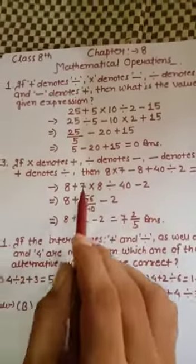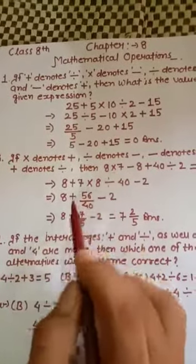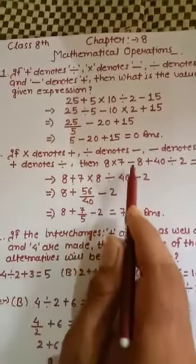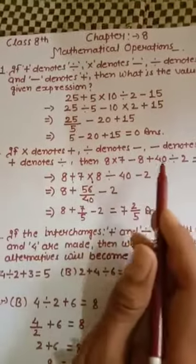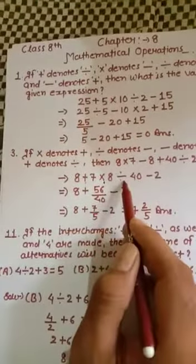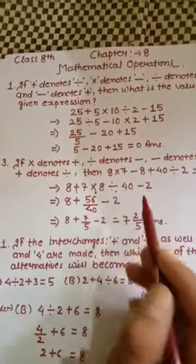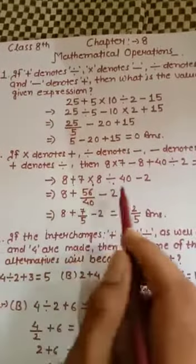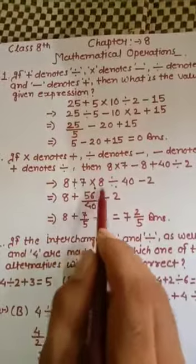Multiply should be replaced with plus, minus should be replaced with multiply, plus should be replaced with divide, and divide should be replaced with minus. Now solve the expression according to BODMAS.